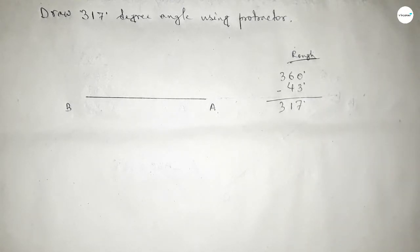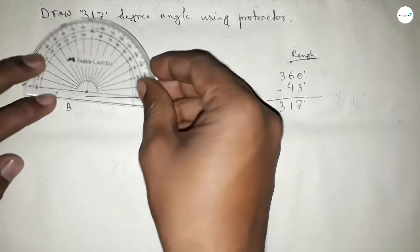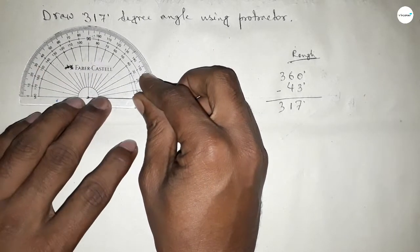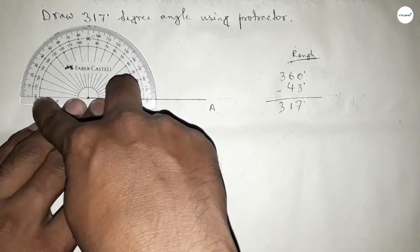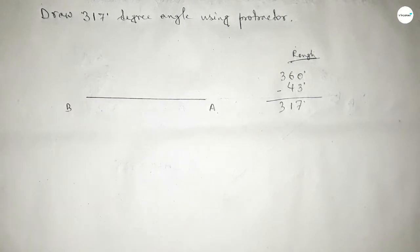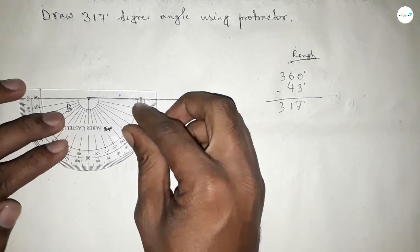First we have to draw a 360-degree angle at point B. Put the protractor on point B and count the angle. This is 180 degrees, plus putting the protractor on the point this way and counting the angle.